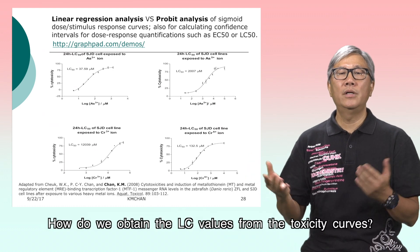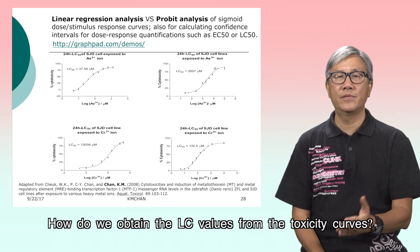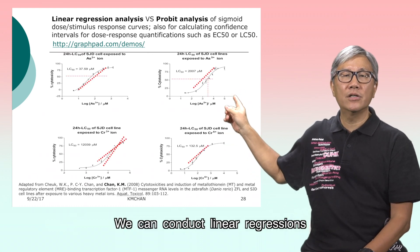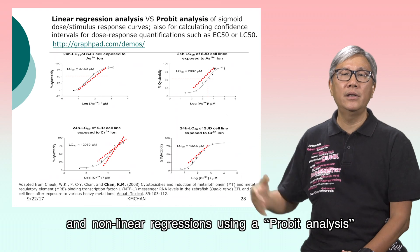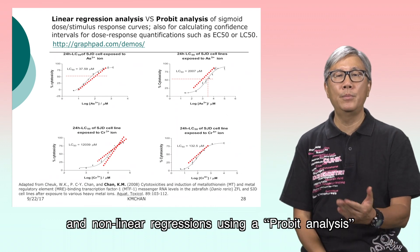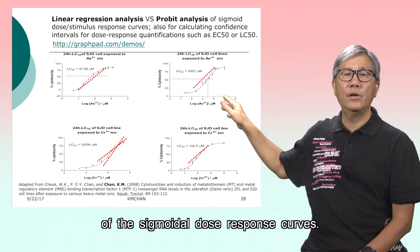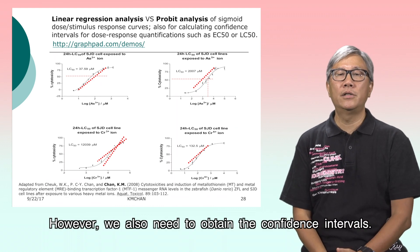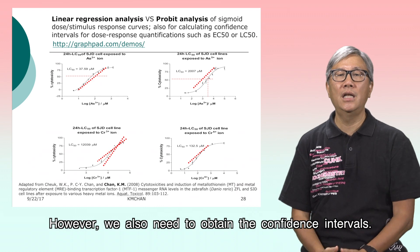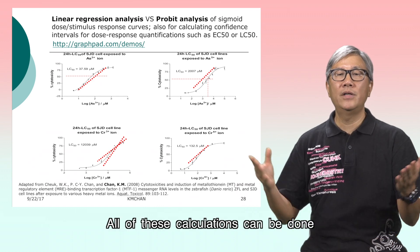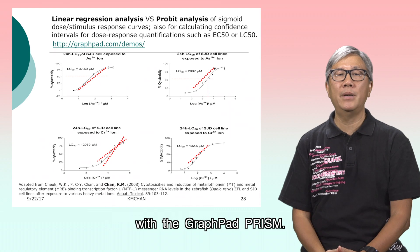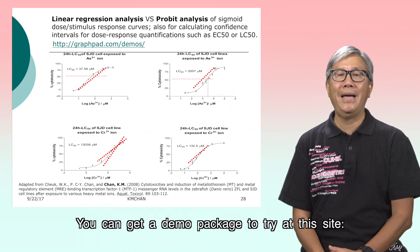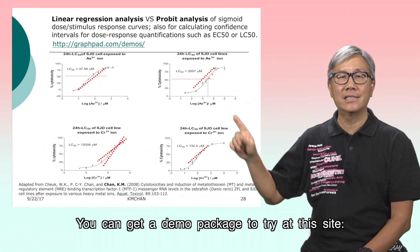How do we obtain the LC values from the toxicity curves? We can conduct linear and nonlinear regressions using a probit analysis of the sigmoidal dose-response curves. We also need to obtain the confidence intervals. All of these calculations can be done with GraphPad Prism. You can get a demo package to try at this site.